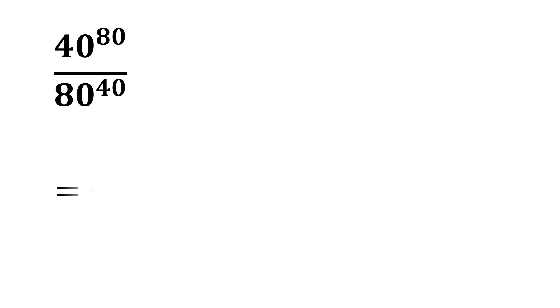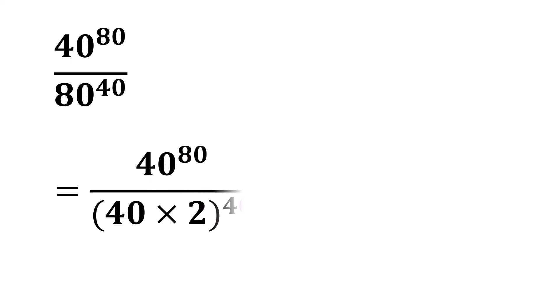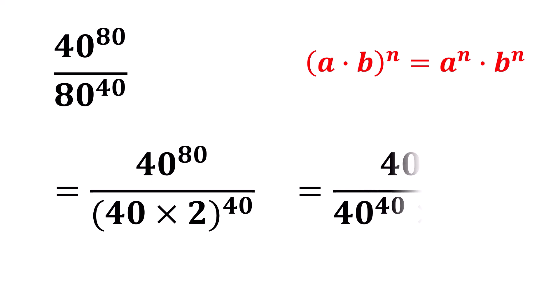Notice that 80 can be written as 40 times 2. So we can rewrite the expression as 40 to the power 80 divided by 40 times 2 to the power 40. Applying the exponential rule that says a times b to the power n equals a to the power n times b to the power n, we can now rewrite the expression as 40 to the power 80 divided by 40 to the power 40 times 2 to the power 40.